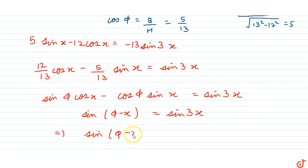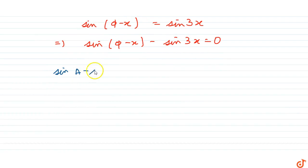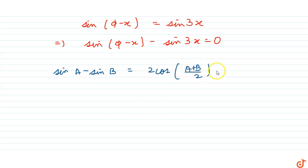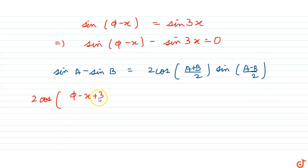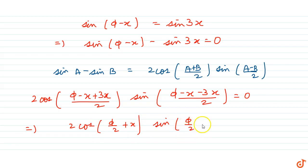This gives sin(φ - x) - sin3x = 0. Applying the sum-to-product formula sinA - sinB = 2·cos((A+B)/2)·sin((A-B)/2), we get 2·cos((φ - x + 3x)/2)·sin((φ - x - 3x)/2) = 0, which simplifies to 2·cos(φ/2 + x)·sin(φ/2 - 2x) = 0.